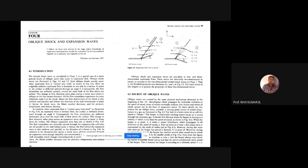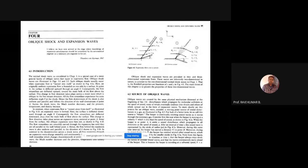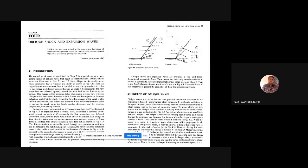Opposite to the oblique shock wave phenomenon, there is another kind of wave known as the expansion wave or expansion fan. Whenever a supersonic flow strikes over a convex corner, an expansion fan will form — the flow is turning away from itself. The flow speed will increase when expanded, so M2 will be greater than M1. When speed increases, static pressure, static temperature, and density all decrease: P2 < P1, T2 < T1, and ρ2 < ρ1.